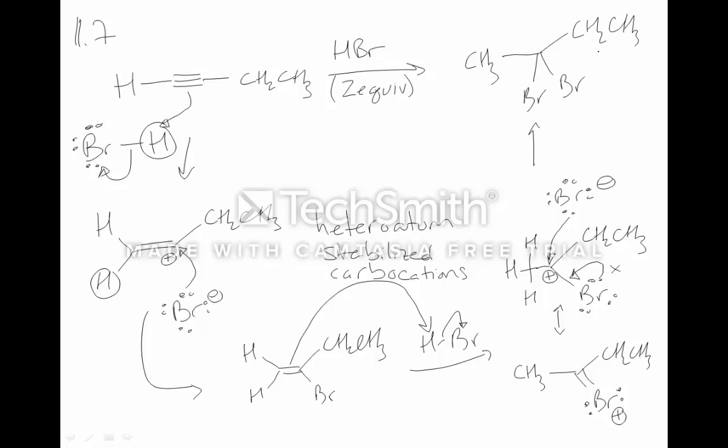So, we have a heteroatom stabilizing the resonance form. You should be able to communicate that. And that's why you get the carbocation at that position because the bromine is stabilizing it. So, that's an addition of HBr across an alkyne.